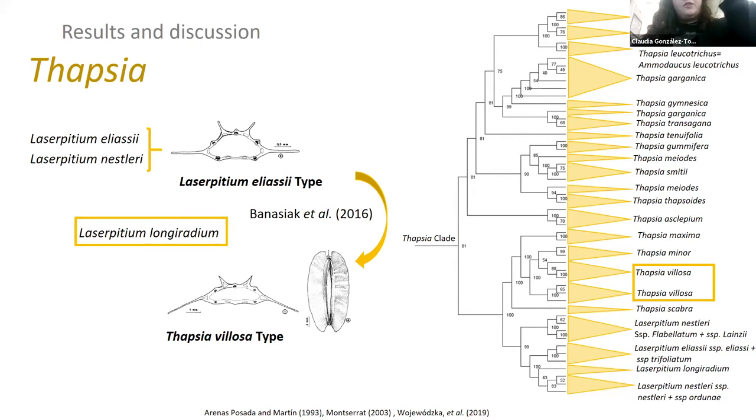And another plot twist is that these two species have 11 vittae, and this other one has only six vittae, and they're completely different.